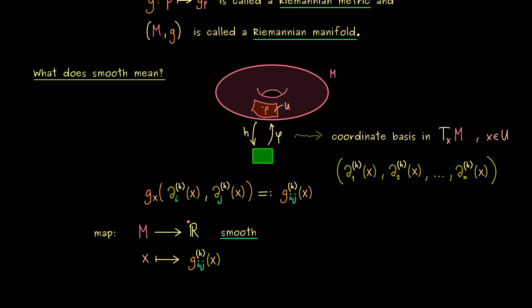Now to be precise, we should say that this map is only defined on the set U. However, this is not a big difference because we would just say that all the maps for all the charts h are smooth. So this is what we want here. All these maps here should be smooth in the sense of manifolds.